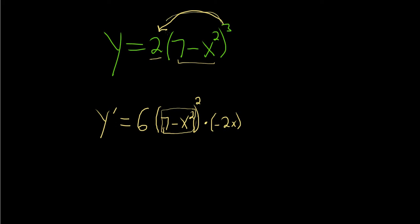So again, you just bring the 3 down, so you get 6, leave the inside untouched, and then times the derivative of the inside.